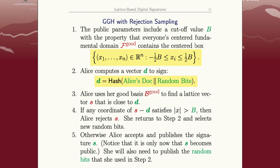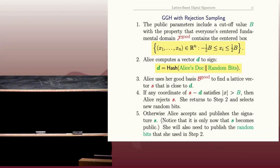And she also needs to publish the random bits that she used. Why? Because when Bob is going to verify the signature, he needs to recreate this hash of the document and the random bits.